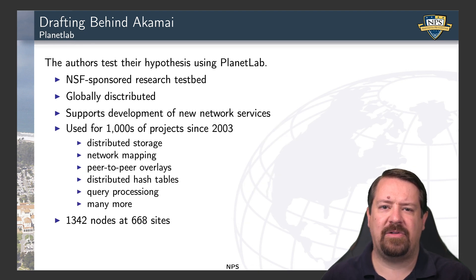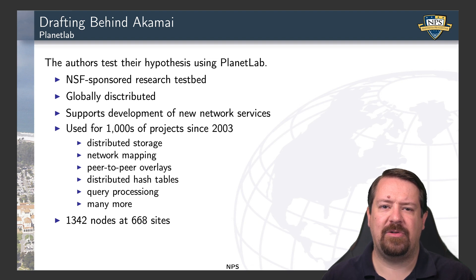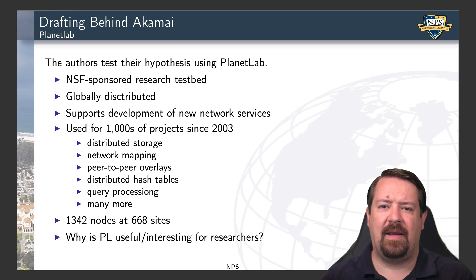The authors of the Drafting Behind Akamai paper test their hypothesis using PlanetLab, an NSF-sponsored research testbed that was globally distributed. It provided points of presence around the world where researchers could get a small amount of computing and network connectivity to try out building their own overlay network. PlanetLab was used for many thousands of projects, including distributed storage, network mapping, and overlays, with a little over a thousand nodes distributed worldwide. Unfortunately, PlanetLab is less maintained than it used to be. Today, however, we have the GENI platform, which can be seen as a successor to PlanetLab, offering resources distributed all over the United States for this type of research.